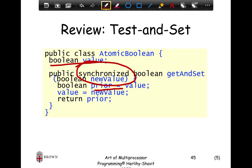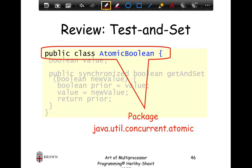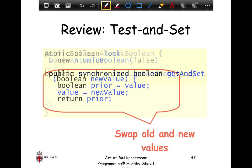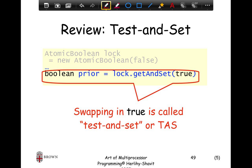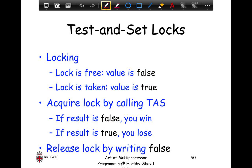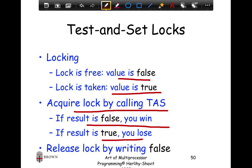In Java syntax, you would have an atomic boolean value and a synchronized method — not the test-and-set instruction directly, but a synchronized function that guarantees atomicity. You note the prior value, put the new value in, and return the prior value. Synchronized guarantees only one thread runs this function at a time. So: lock free means value is false, lock taken means value is true. Acquire by calling test-and-set — result false means you win, result true means the lock is busy. Release by writing false.